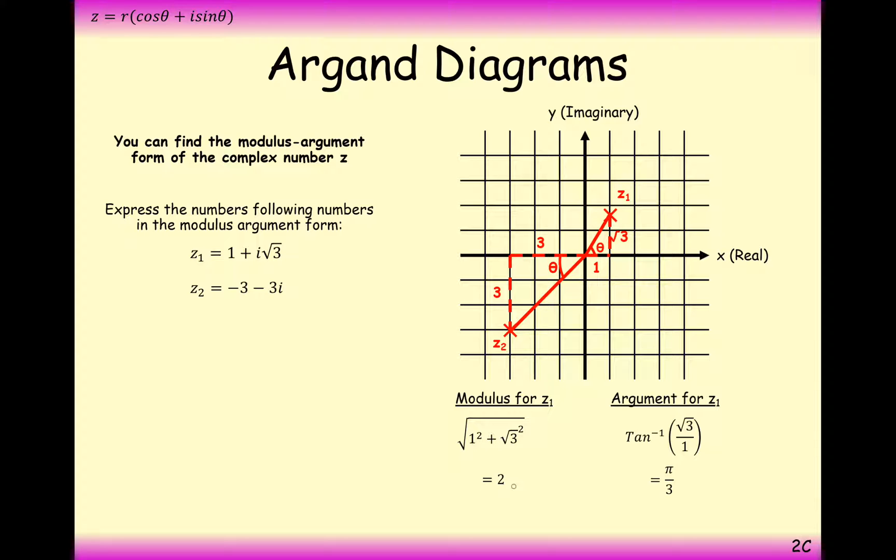Now that we know the modulus and now that we know the argument, all we need to do is just now replace this value as r and this value as theta into what we've got up here. So here, z is going to equal 2 brackets cos of theta over 3, so pi over 3, plus i sine pi over 3, close brackets. And that's your final answer.